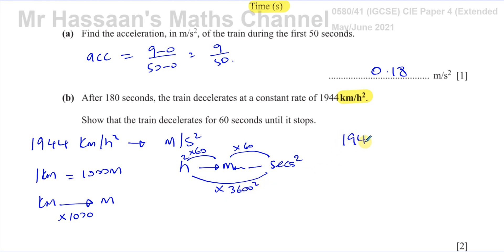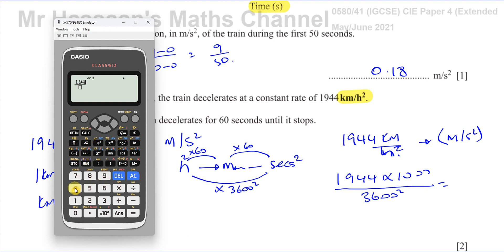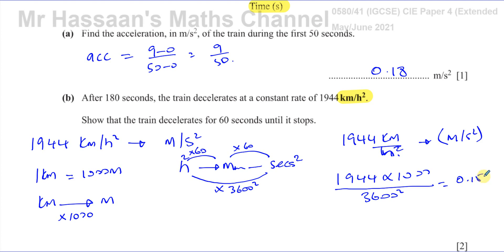So if I've got 1,944 kilometers per hour squared, to convert that I have 1,944 times 1,000 in the numerator. Because it says per hour squared, the 3,600 squared goes in the denominator — it's after the word 'per', so we put it in the denominator. So that's how this becomes meters per second squared. When I put that in my calculator: 1,944 times 1,000 divided by 3,600 squared, that gives us 3 over 20, which is 0.15 meters per second squared.